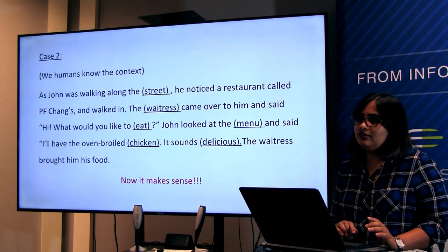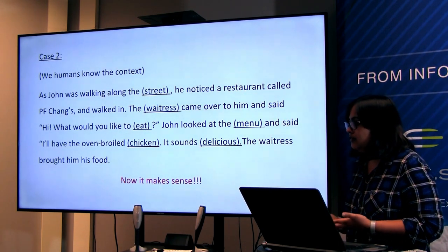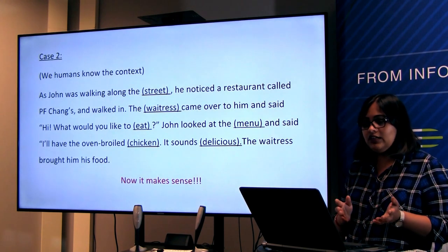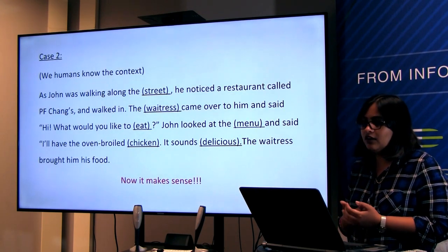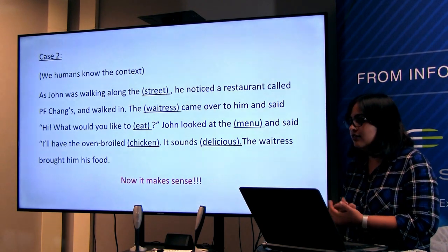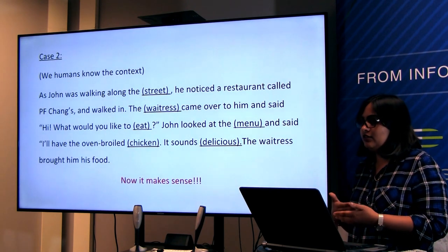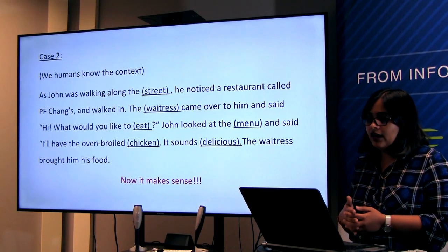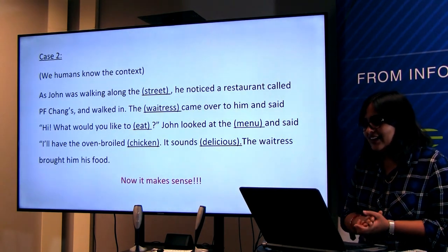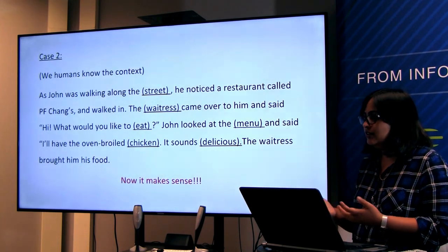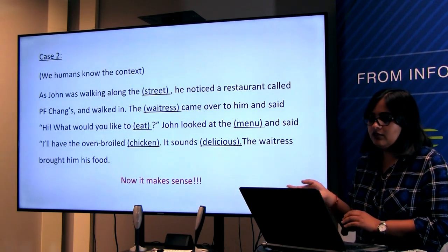We know the context. How will humans solve the example? 'As John was walking along the window street, he noticed a restaurant called P.F. Chang's and walked in.' Who should come over? Either the waiter or the waitress. 'What would you like to eat or drink?' — that's what we do in a restaurant. 'John looked at the menu.' In the restaurant, our scripts happen. 'I'll have the oven-broiled chicken.' Not oven-broiled tractor. 'It sounds delicious.' The adjective must relate to the context.